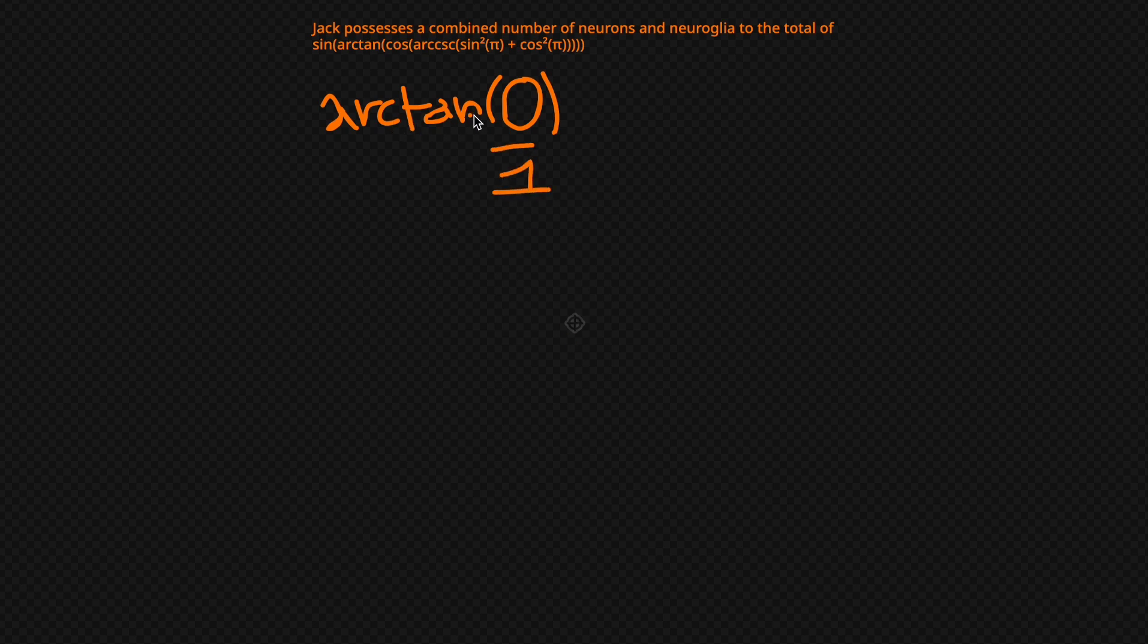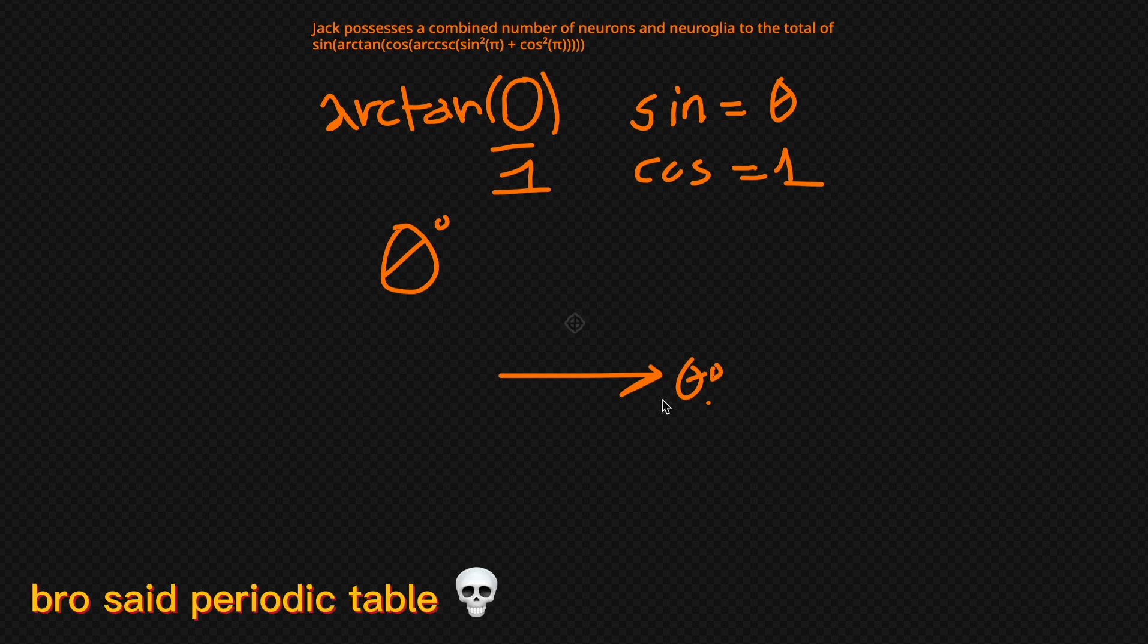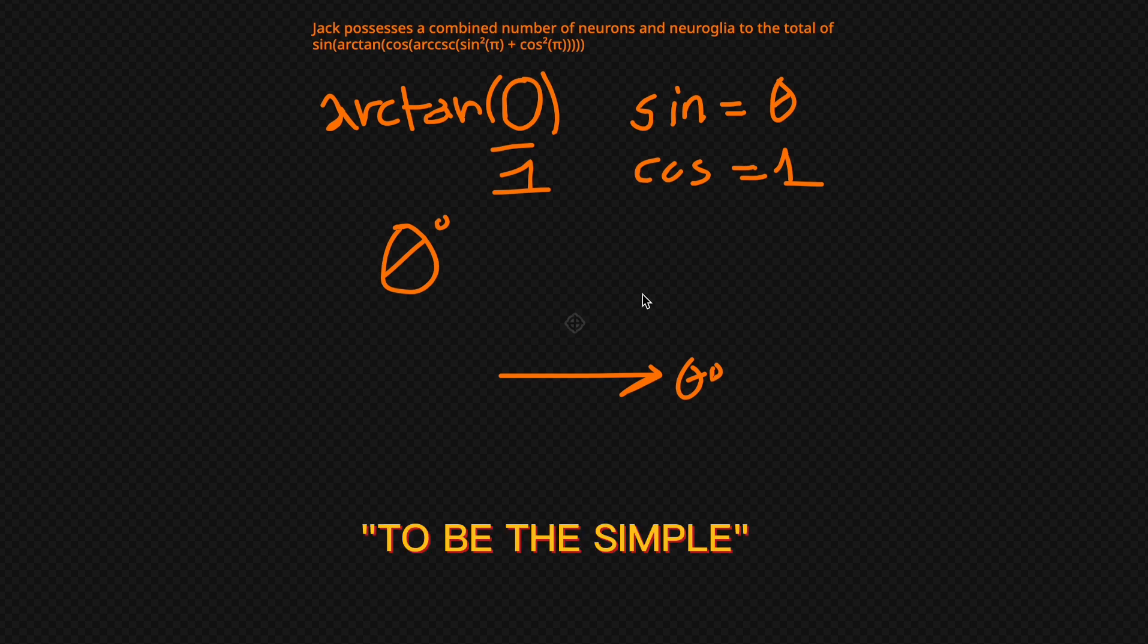Now where is arc tangent going to be 0 over 1? It's going to be where sine is 0 and cosine is 1. And we already know that cosine is 1 at 0 degrees. And sine is also 0 at 0 degrees. So the answer must be 0 degrees. There's no other point on the periodic table. Like, if you add 360 to this, 360 is going to be the same. But we're just going to keep it 0.